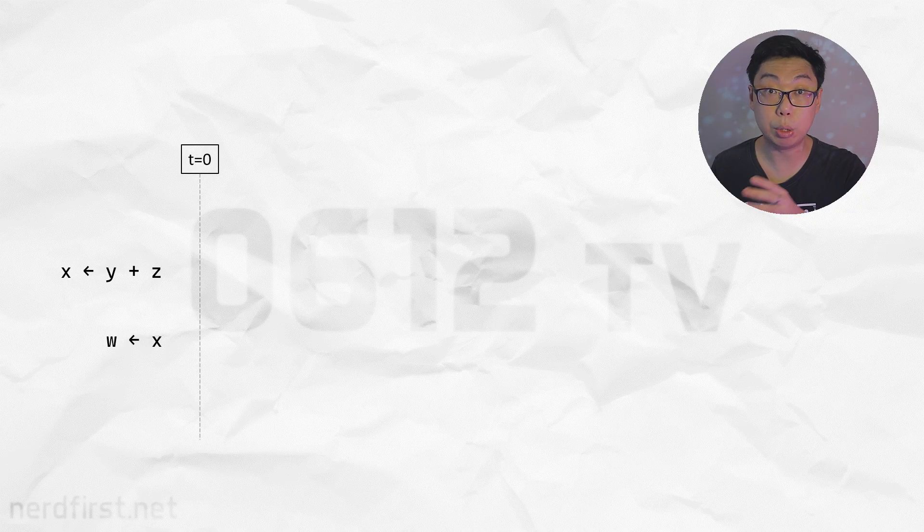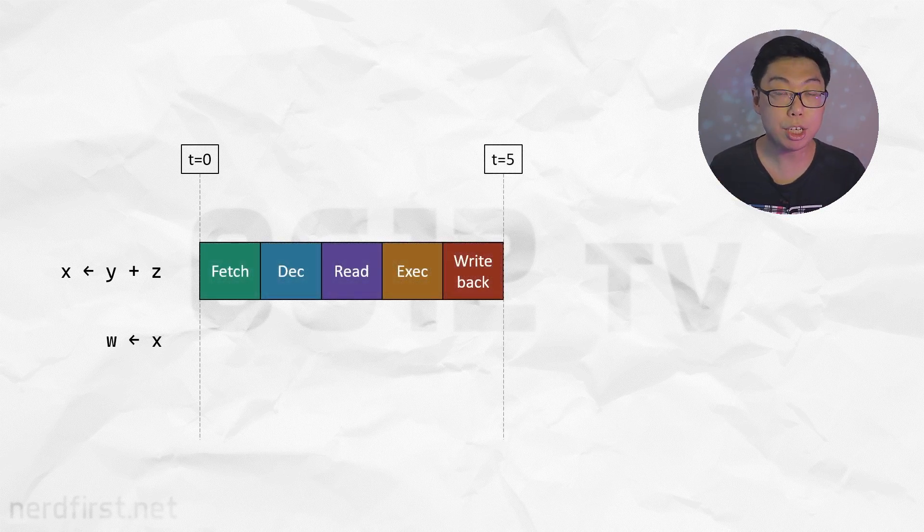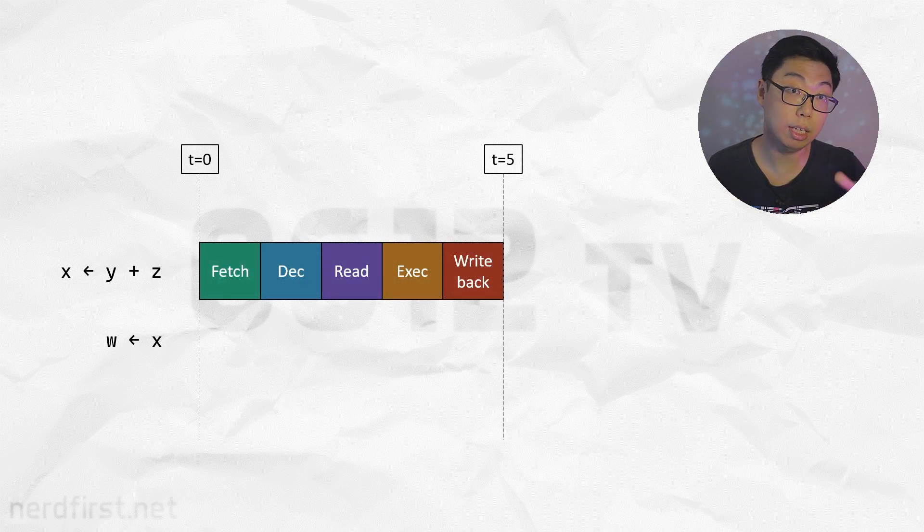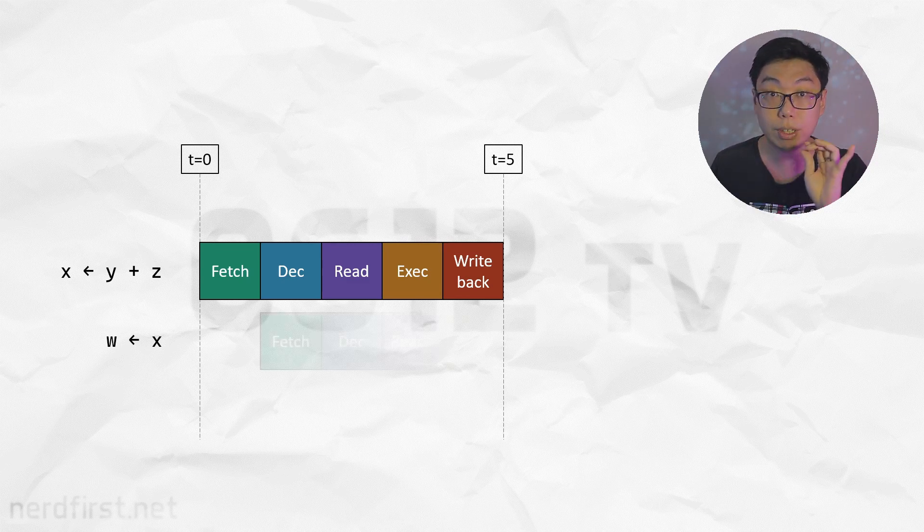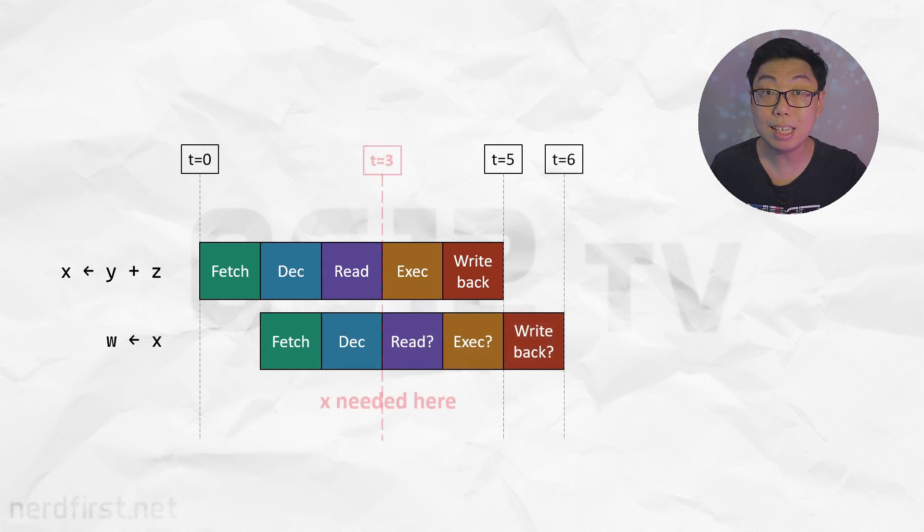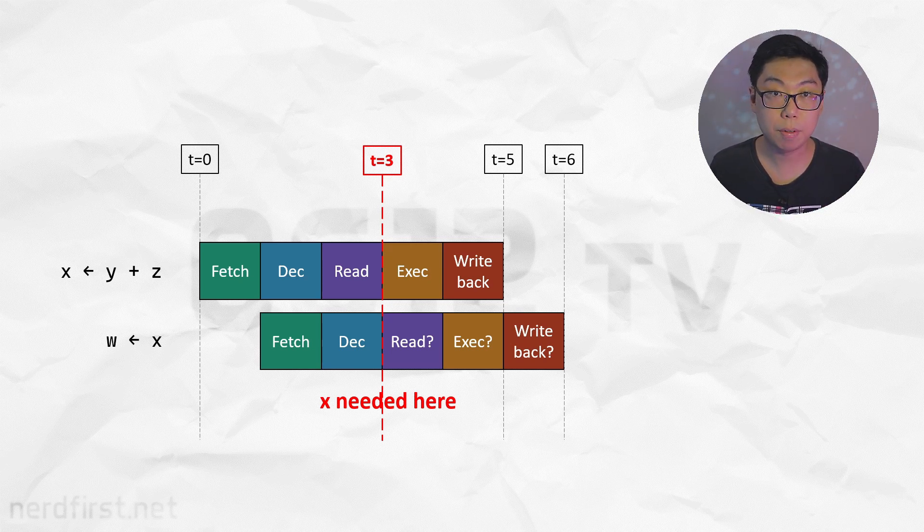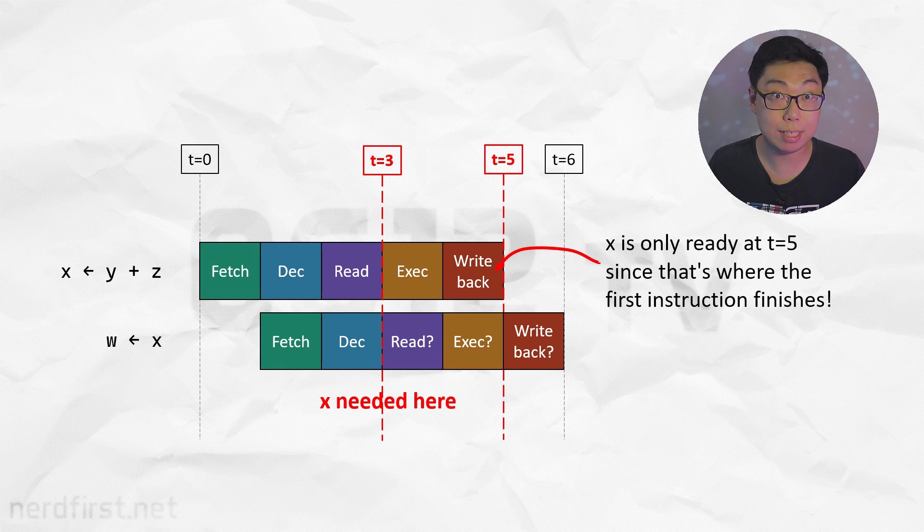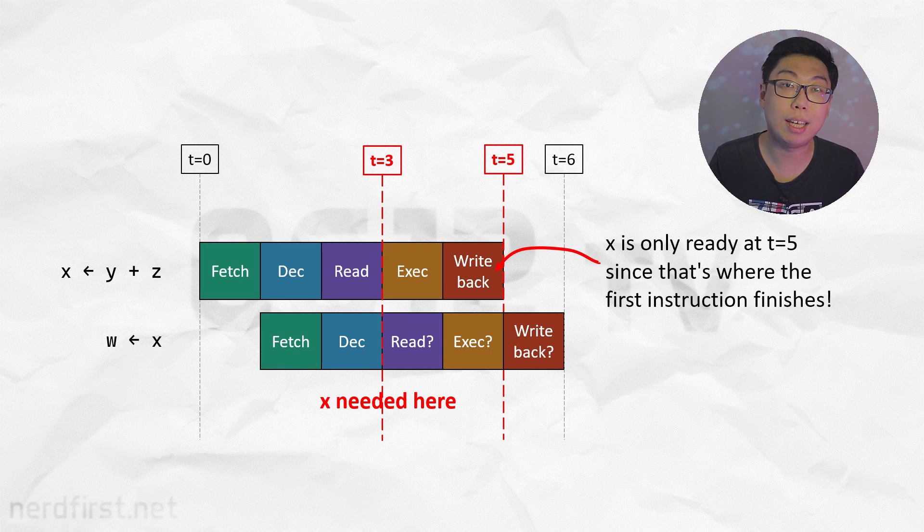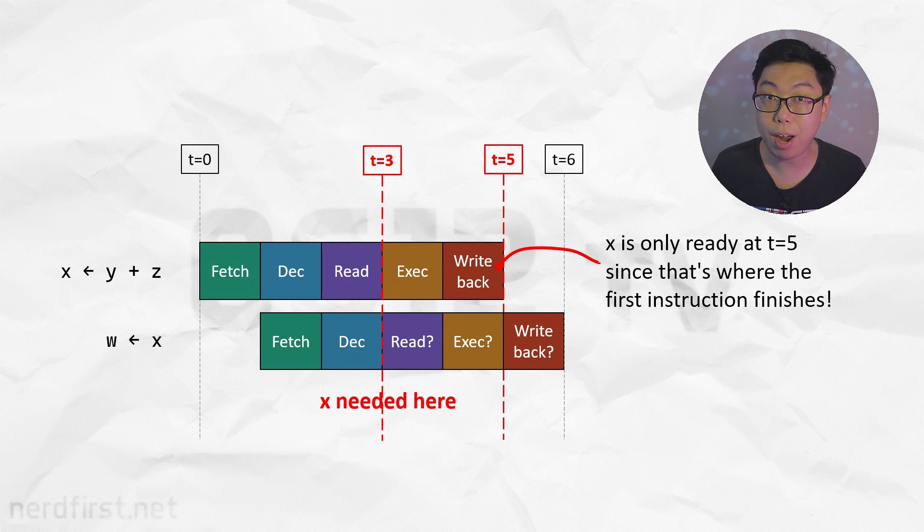Assuming we're still sticking to the five-stage pipeline described previously, here's what's going to happen. If the first instruction starts at t equals 0, it's going to do its magic and write the answer into register X by t equals 5. Now consider the second instruction, which needs to read off the value of X. It has to do this by t equals 3. That's where its read stage is. We should be done with the entire calculation by t equals 5. But the value of X is only available at t equals 5. I don't know what the second instruction is reading off, but it's not going to be correct, simply because the correct answer isn't yet ready.